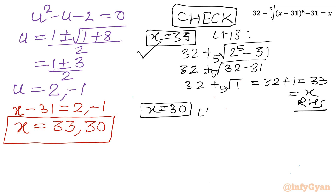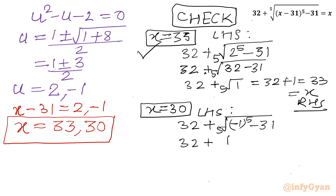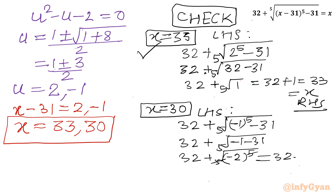For x = 30: LHS = 32 plus the 5th root of (30 minus 31) power 5 minus 31 = 32 plus the 5th root of (minus 1) power 5 minus 31 = 32 plus the 5th root of minus 32, which equals 32 minus 2 = 30. This equals x, so the solution is verified.